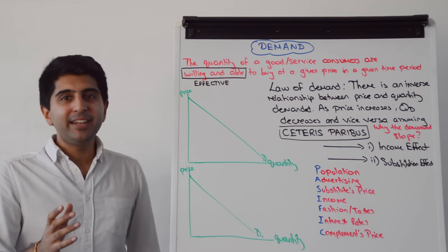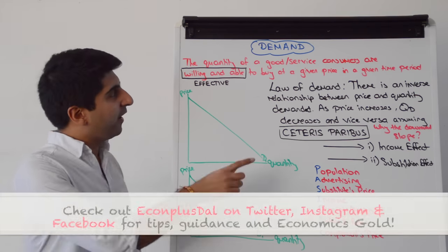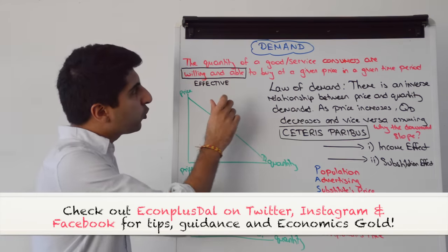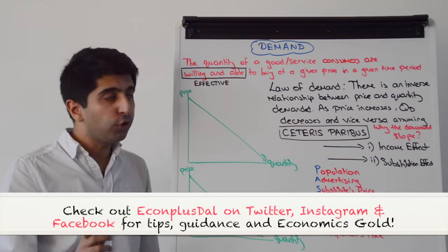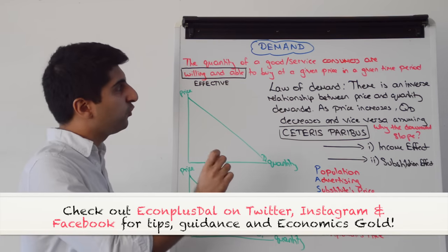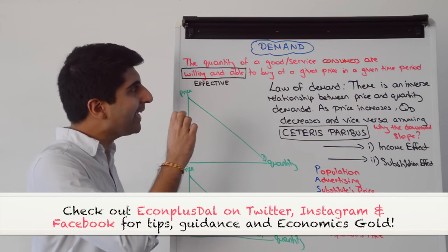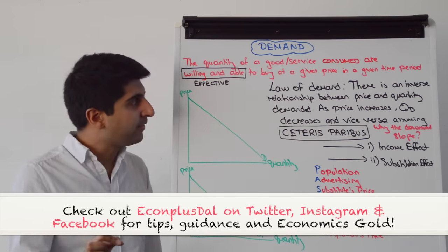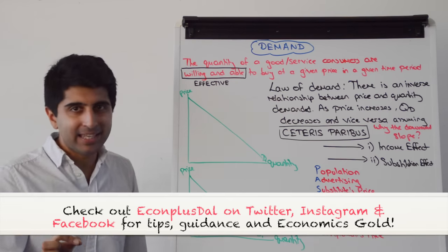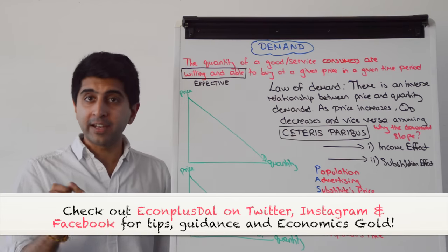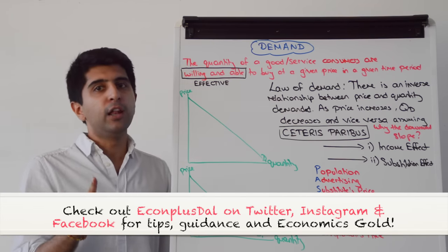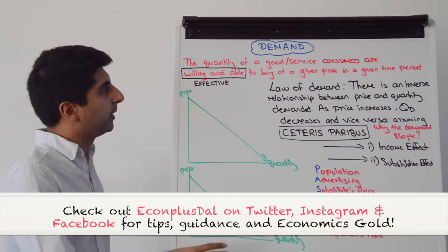Hi everybody. Demand in economics is defined like this. Demand is the quantity of a good or service consumers are willing and able to buy at a given price in a given time period. That definition is very important, learn it word for word.